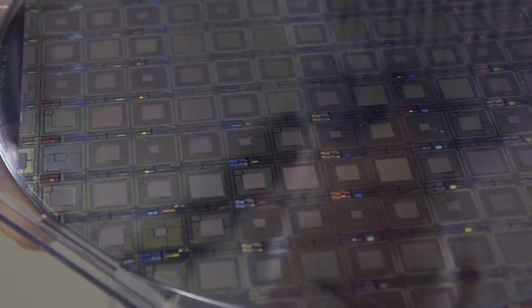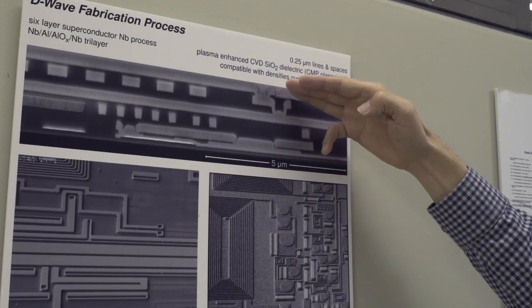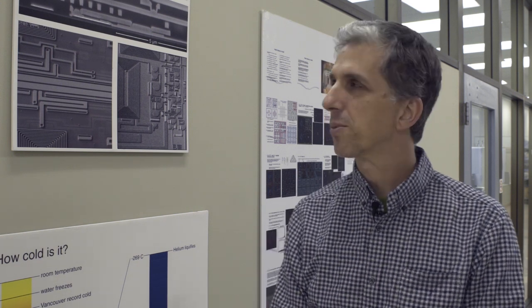That integrated circuit chip is really just a series of metal layers predominantly which you can see in cutaway here. The process that goes into fabricating this integrated circuit chip is actually not that different from that which goes into making the chip that drives your cell phone or your laptop.